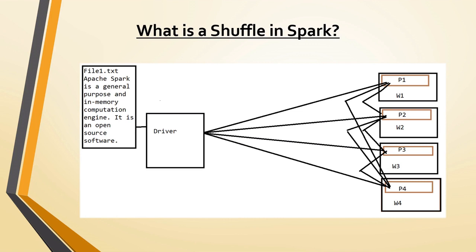The split won't be exactly five lines per partition — it depends on the memory of the partitions. The single file will be split across the partitions, and inside each partition it will calculate the count of words: for example, how many times 'Apache' is repeated, how many times 'Spark' is repeated, how many times 'is' is repeated, etc. Each partition will do the internal calculation first and then the results will be collated at the end and sent back to the driver.